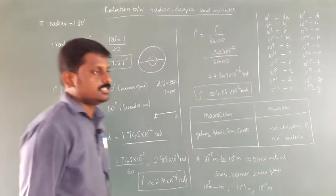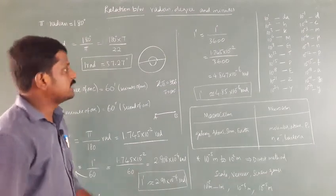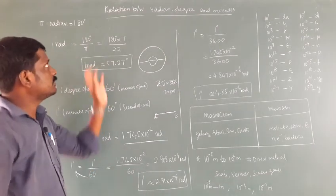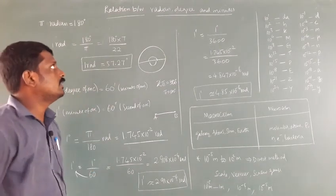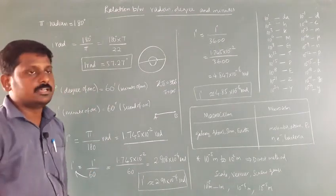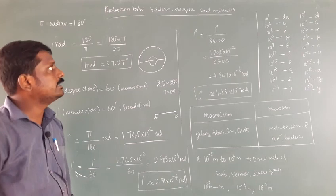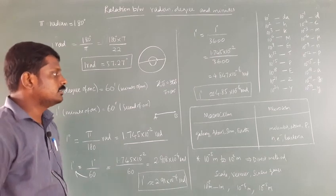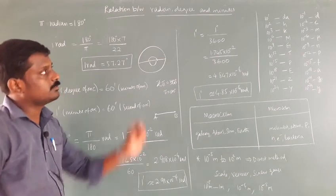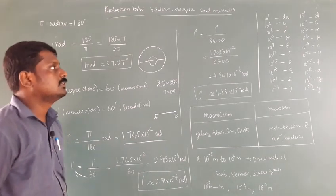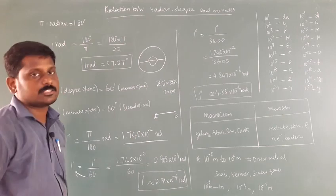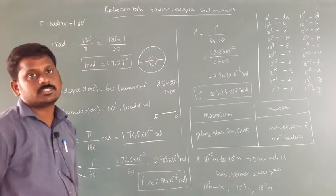So in this class, we have discussed the relation between radian, degree and minutes, then macroscopic and microscopic worlds, and some powers of 10 — both positive and negative. Okay students.